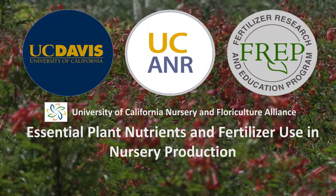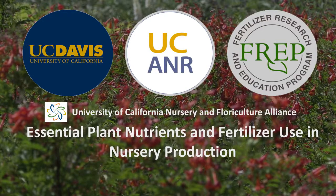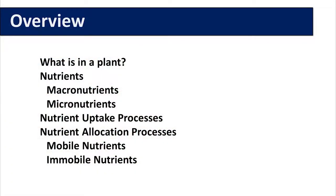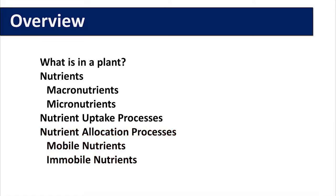This video will talk about essential plant nutrients and fertilizer use in nursery production. We will talk about what is in plants, the nutrients — macronutrients and micronutrients — nutrient uptake processes, nutrient allocation processes, and whether plant nutrients are mobile or immobile in the plant.